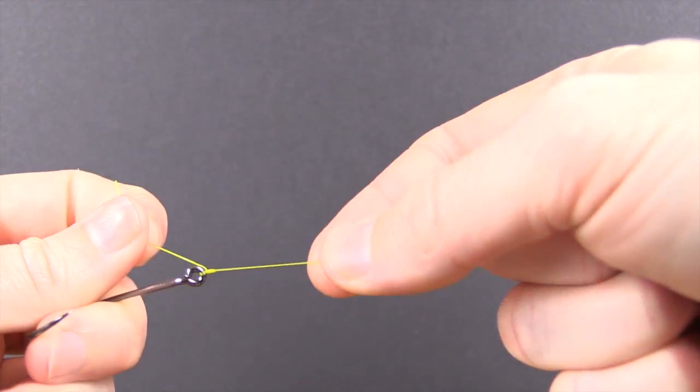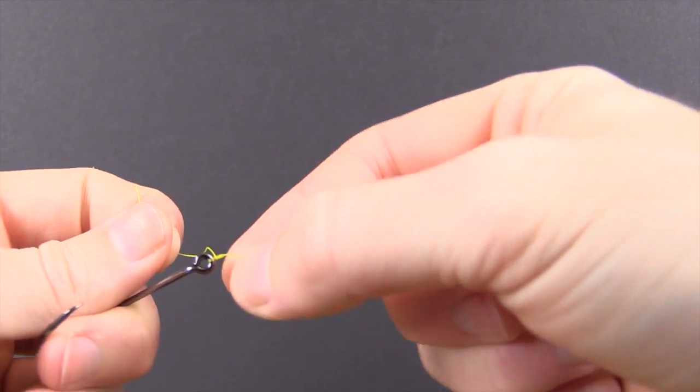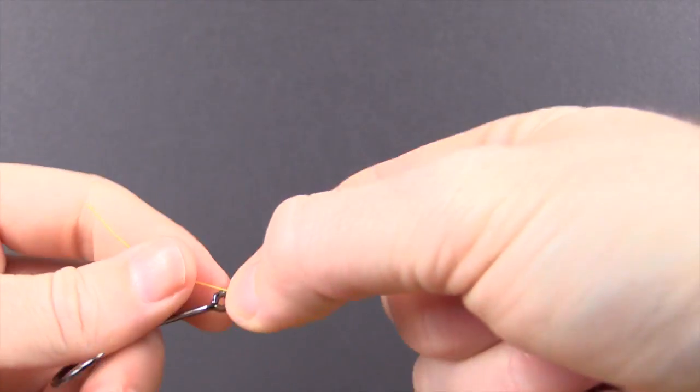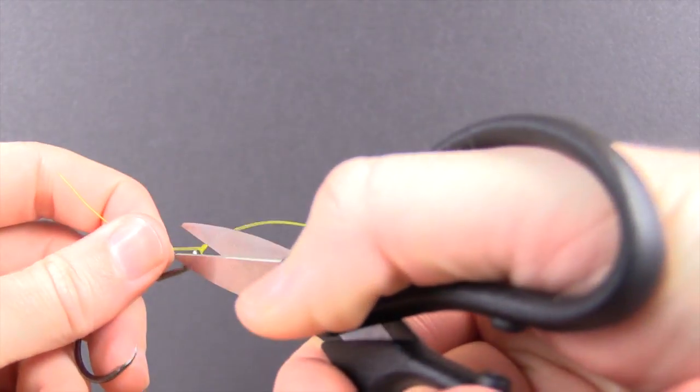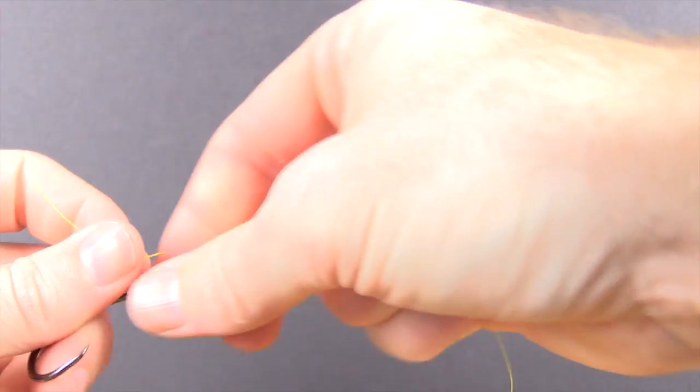It's called the improved clinch knot. And this is the 10 turns with doubled up through the hook. So now it's as simple as clipping off the tag end, and that's it. That is the knot.